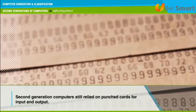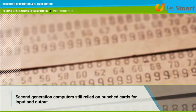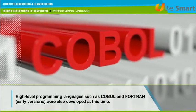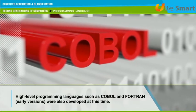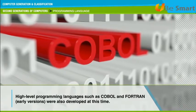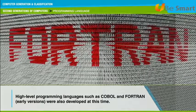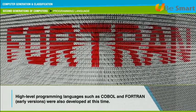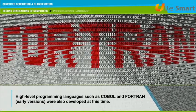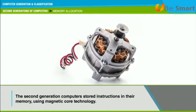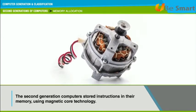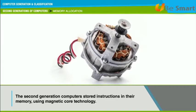However, second generation computers still relied on punched cards for input and output. For programming, second generation computers moved from cryptic binary machine language to symbolic or assembly language, which allowed programmers to specify instructions in words. High level programming languages such as COBOL and FORTRAN were also developed at this time. These were also the first computers to store instructions in their memory using magnetic technology, and they were developed for the atomic energy industry.